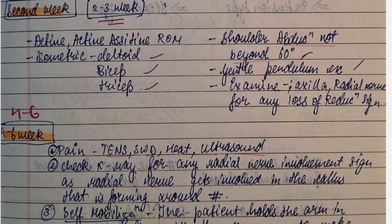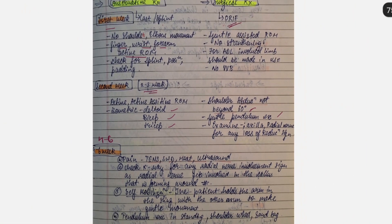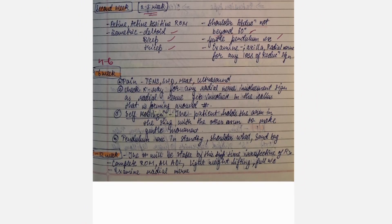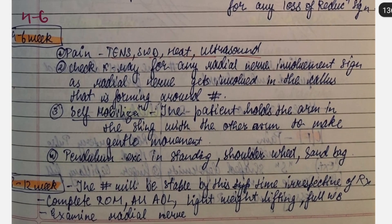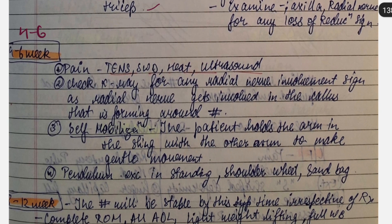Now coming to the four to six weeks, which is same in both conservative and surgical. For pain, we can use TENS, SWD, heat, and ultrasound. Then we have to check x-ray for any radial nerve involvement sign as radial nerve gets involved in the callus that is forming around the fracture.